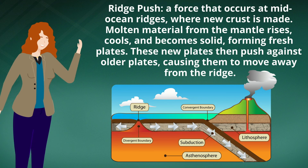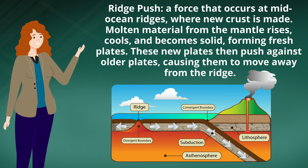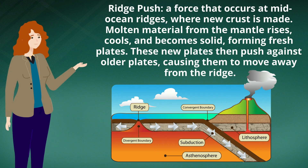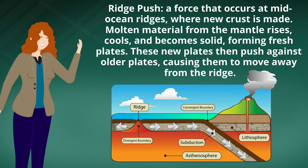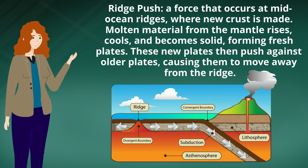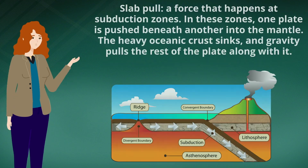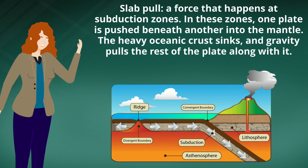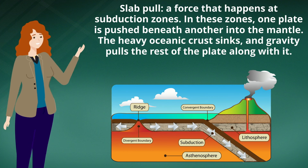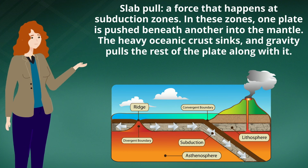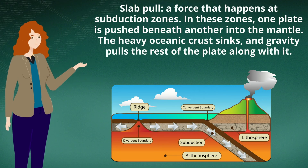Ridge push is a force that occurs at mid-ocean ridges where new crust is made. Material from the mantle rises, cools, and becomes solid, forming fresh plates. These new plates then push against other plates, causing them to move away from the ridge. Slab pull is a force that happens at a subduction zone. In these zones, one plate is pushed beneath another into the mantle, and the heavy oceanic crust sinks as gravity pulls the rest of the plate along with it.